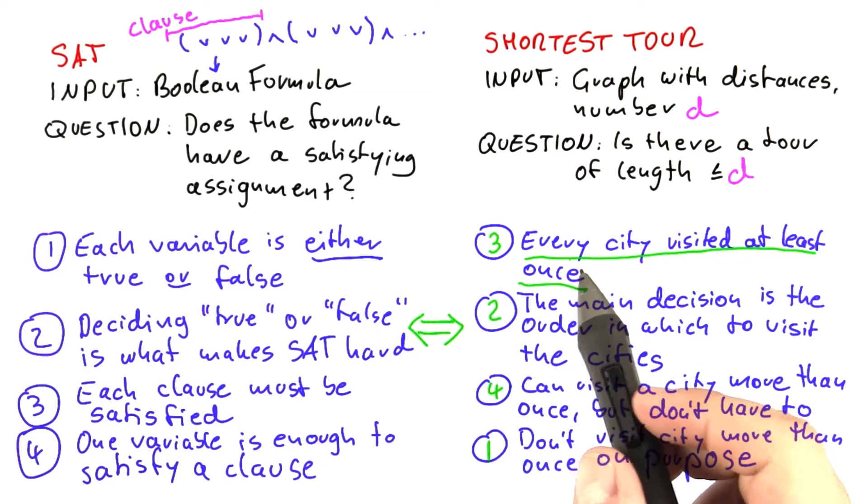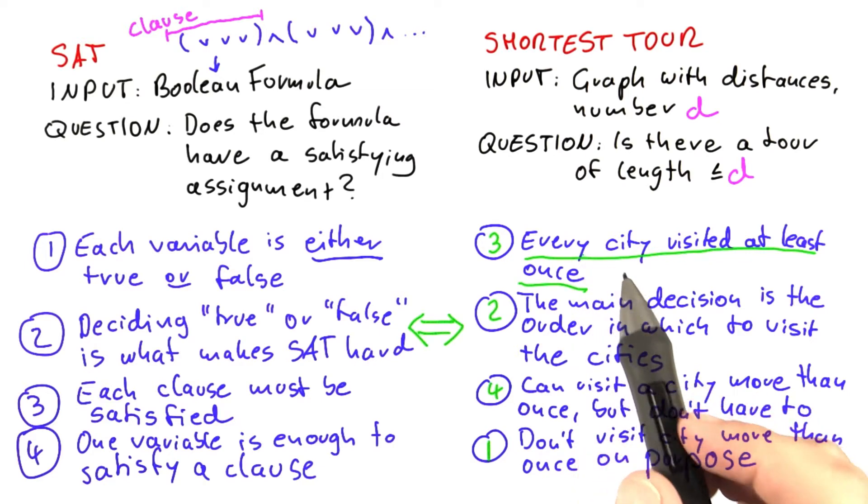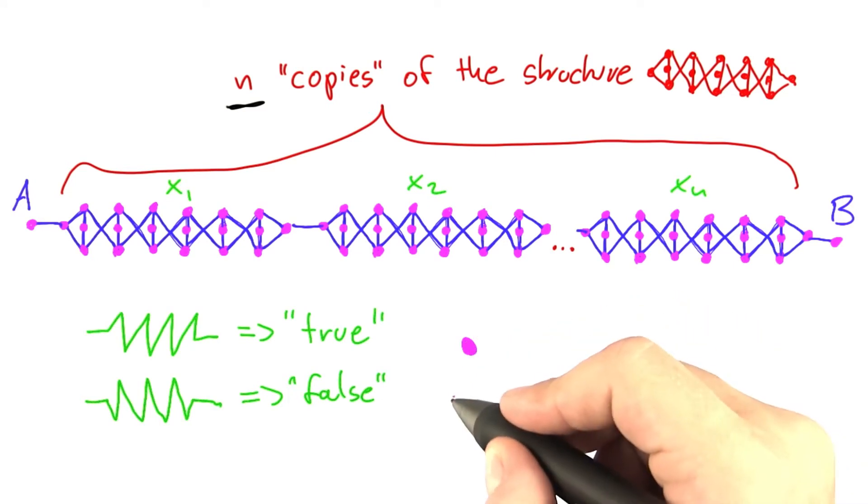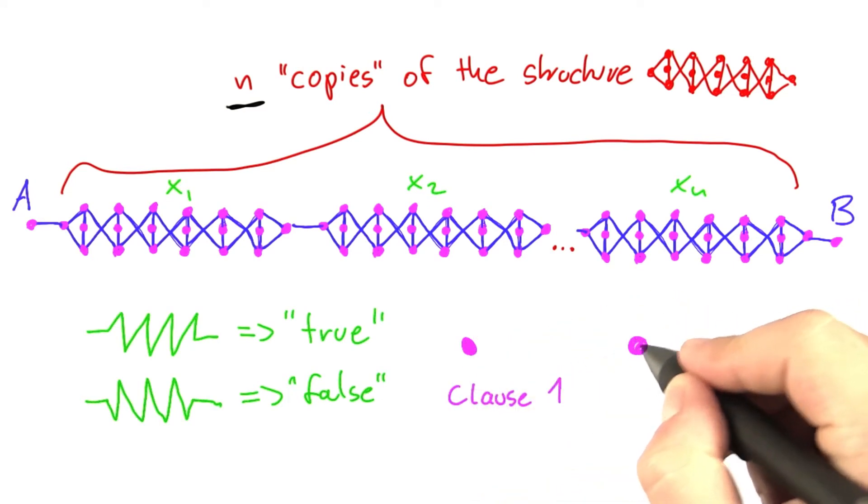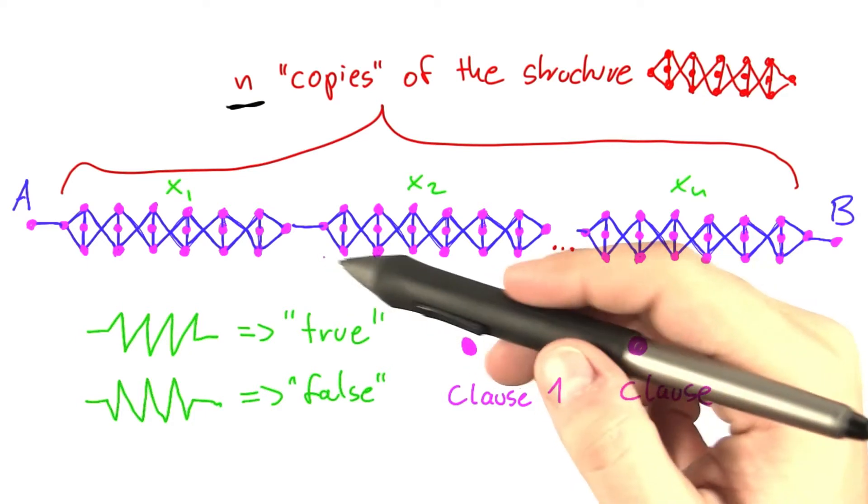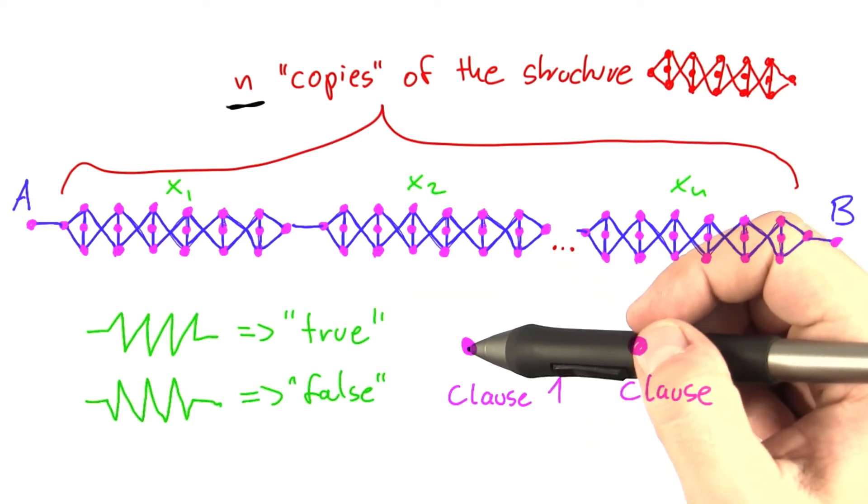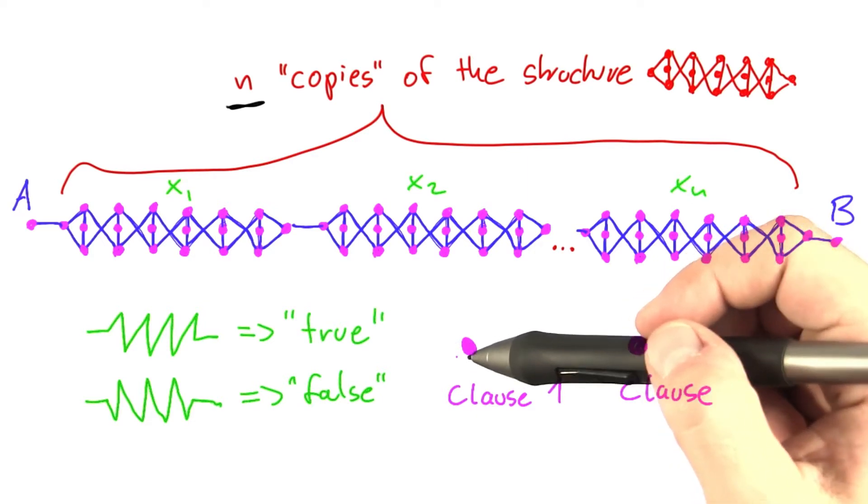So this would suggest to add some additional vertices to the picture that represent clauses. Let's say we have one vertex here that represents clause number one, and another vertex here for clause number two, and so on. Visiting this vertex here represents satisfying that clause.